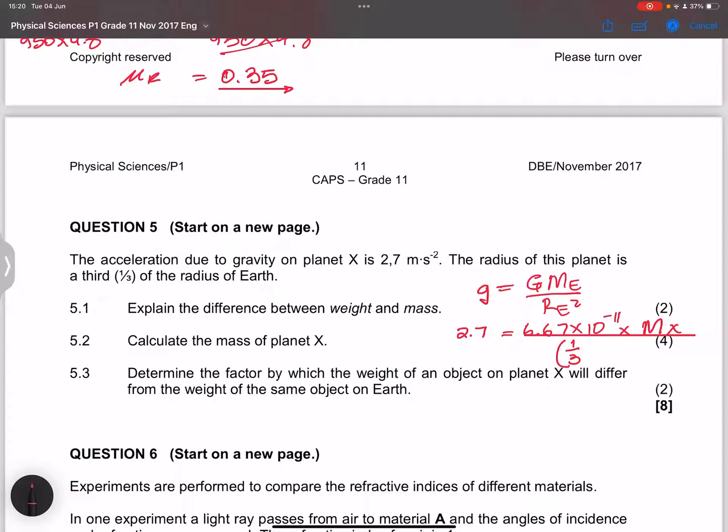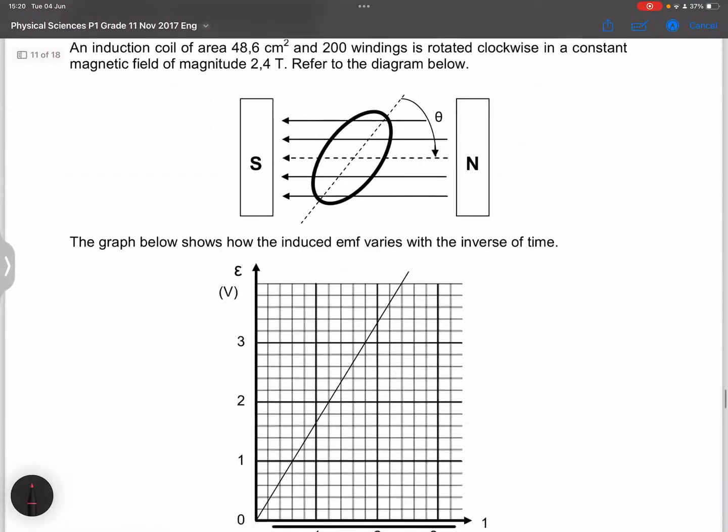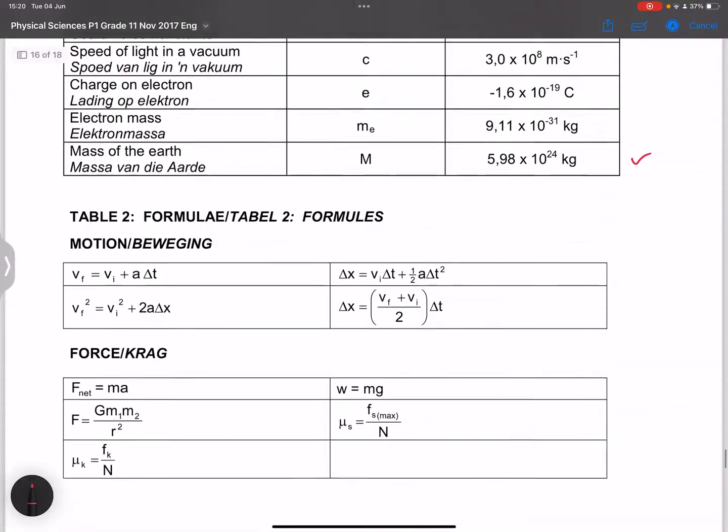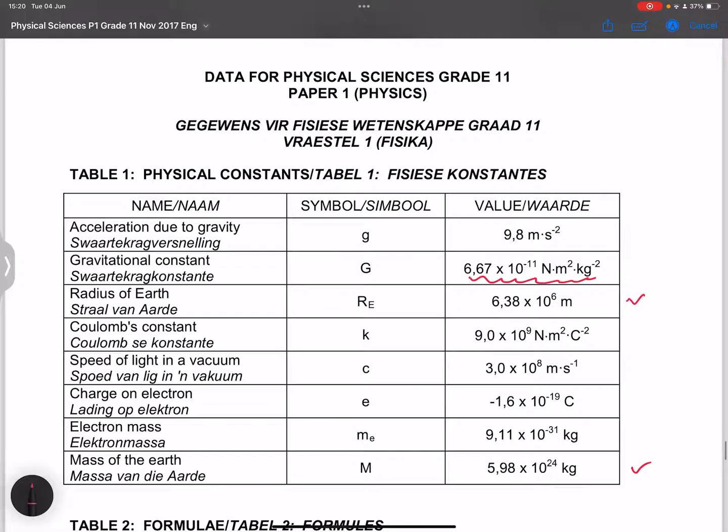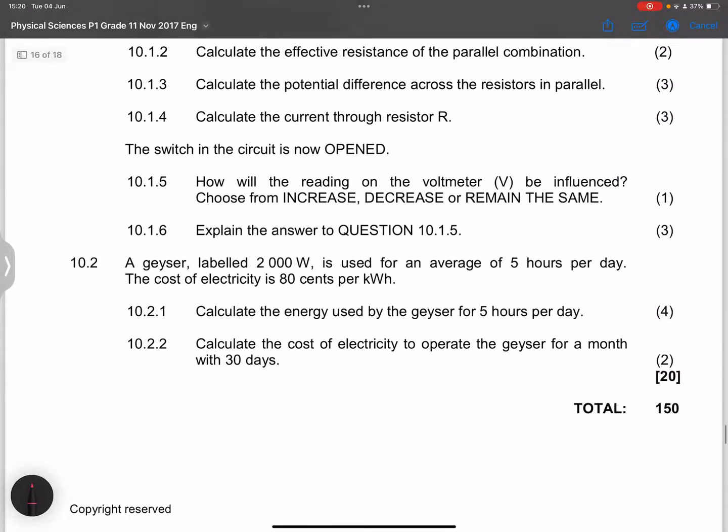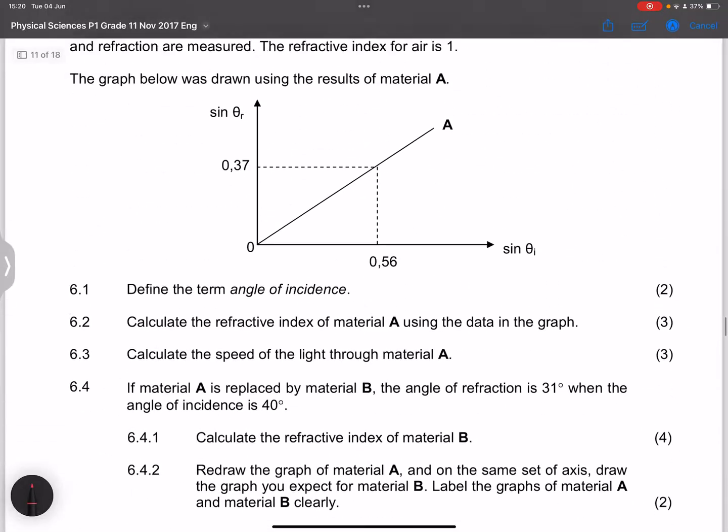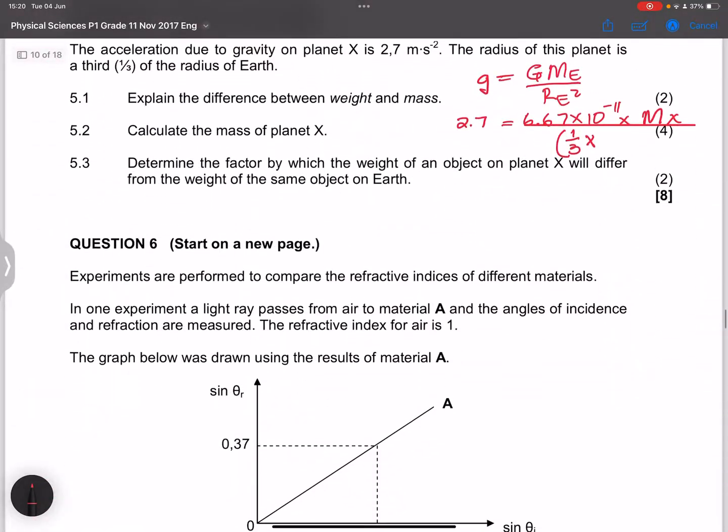Now please remember, we said the radius of the Earth. Please note, 6.64, where is that? I mean, 6.38 rather, times 10 to the power 6. So 6.38. So this would be 6.38 times 10 to the power 6, but this is squared.